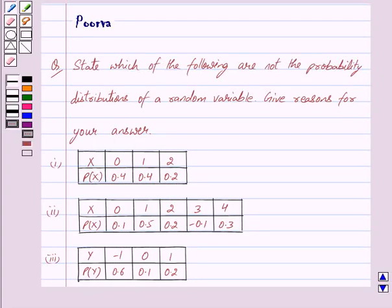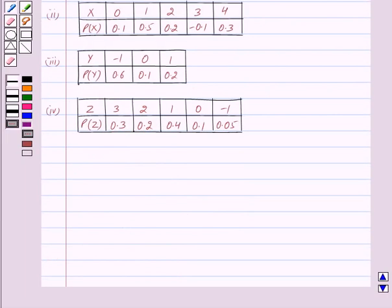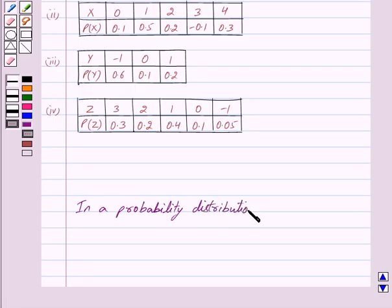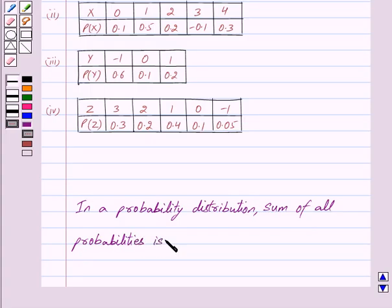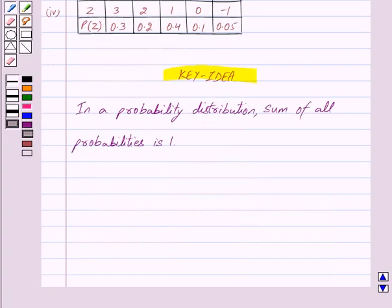Good morning friends, I am Purva and today we will work out the following question: State which of the following are not the probability distributions of a random variable. Give reasons for your answer. Now in a probability distribution, the sum of all probabilities is 1. So this is the key idea behind our question. Let us begin with the solution now.